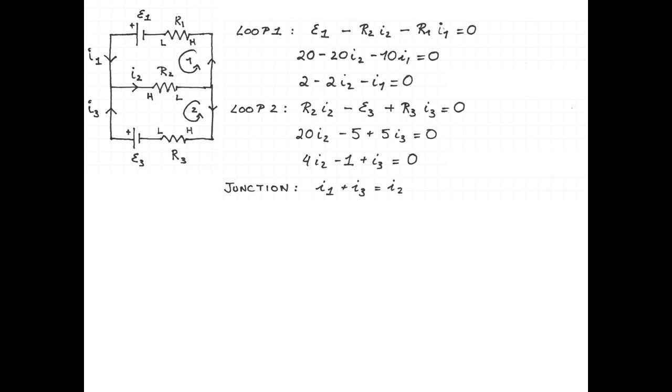Let's look at our junction rule now. If I look at the junction rule that's on the left hand side of the picture, I see that I1 comes into the junction. Current I3 comes into the junction as well. And I2 goes out. So by the ancient principle of what comes in must go out, I1 plus I3 is equal to I2. We have our three equations.